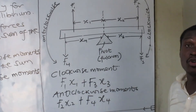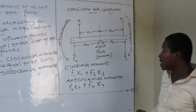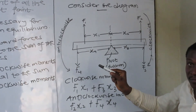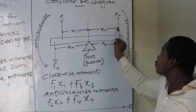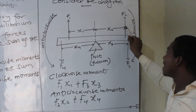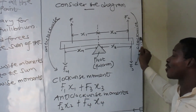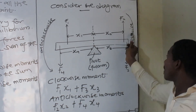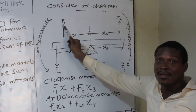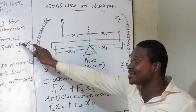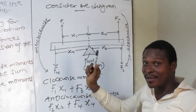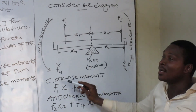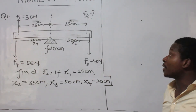If you understand just this concept, your troubles are over. We will take a question and see how to apply all these things. Remember: clockwise moments are F1×X1 and F3×X3. F2 was not included because, although we are going clockwise, F2 has no perpendicular distance to the line of action in that direction. Anticlockwise moments are F2×X2 and F4×X4. F1 has no movement in the anticlockwise direction. Now, let's look at the main question.